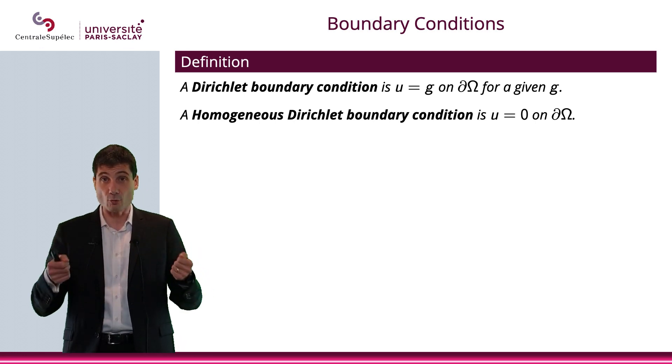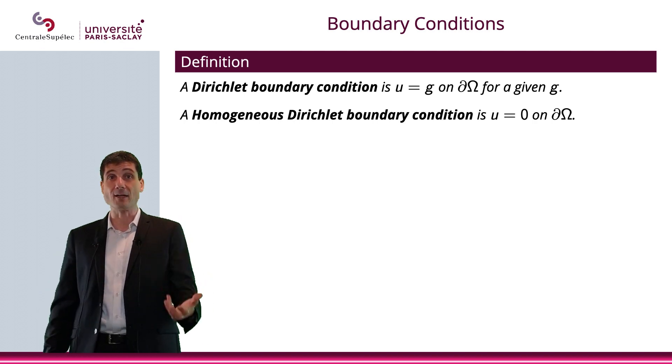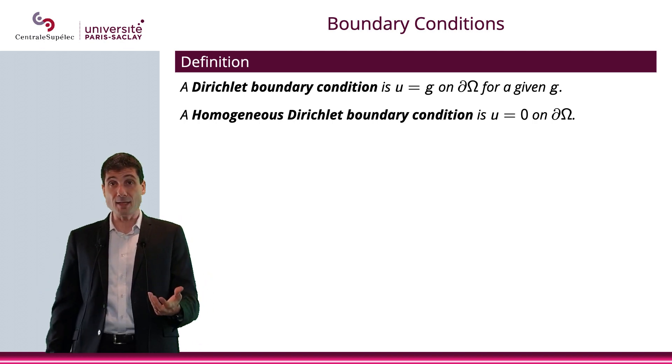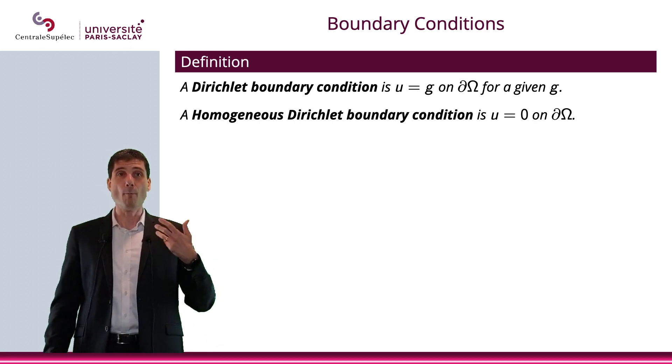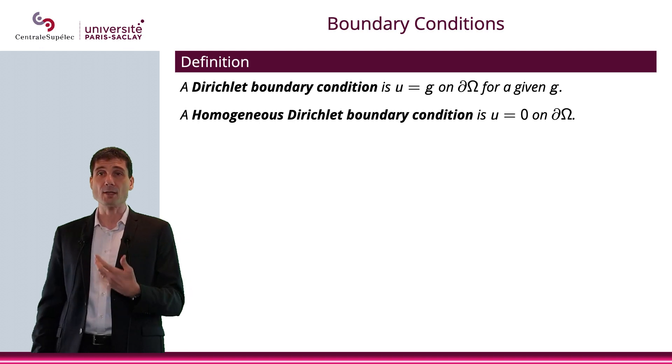So, that's you prescribe the value of U on the boundary. And possibly, the value you prescribe is 0. In this case, we have what we call a homogeneous Dirichlet boundary condition.